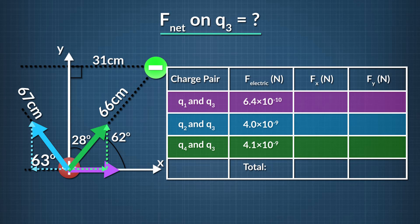Here's a zoomed-in view of the forces acting on q3, along with the electric force components we want to solve for. To figure out the x and y components, we can use the sine and cosine functions. Since we know all the angles involved, all we'll need to do is use sine and cosine of those angles and multiply by the force magnitude. We'll make all of our angles with respect to the positive x axis, consistently using cosine for x components and sine for y components.